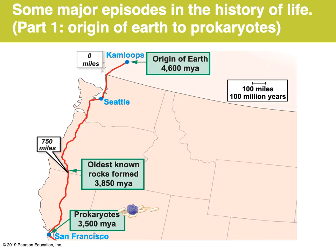Starting up in Kamloops, you drive across the border and head down past Seattle. By the time you're getting to the top of California, you'll see the oldest known rocks — so just the Earth solidifying from this molten mass into a place where rocks could start forming took about a billion years. As things cooled and became more stable, the first organic molecules formed. The first evidence of life contained within cells — prokaryotes forming — is at about 3.5 billion years ago, or 3,500 million years ago. So now we're well into California.